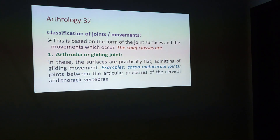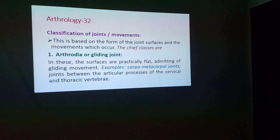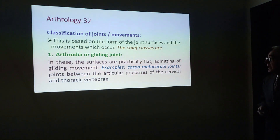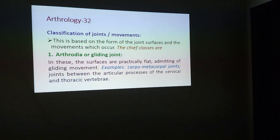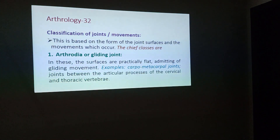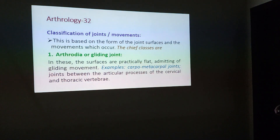On the basis of classification of joints by their movements, they are based on the form of the joint surfaces and the movements which occur in the chief classes. The first class is arthrodia, or gliding joints, in which the surfaces are practically flat, admitting of gliding movement. Examples include the carpometacarpal joints and the joints between the articular processes of the cervical and thoracic vertebrae, where the articular processes glide over each other.